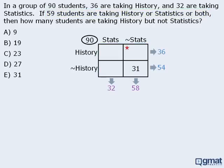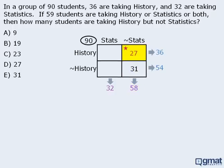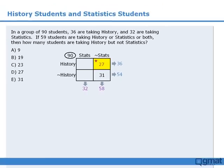We're almost done. Since these two boxes must add to 58, and one of them contains 31 students, we know that the starred box must contain 27 students, which means the answer is D.